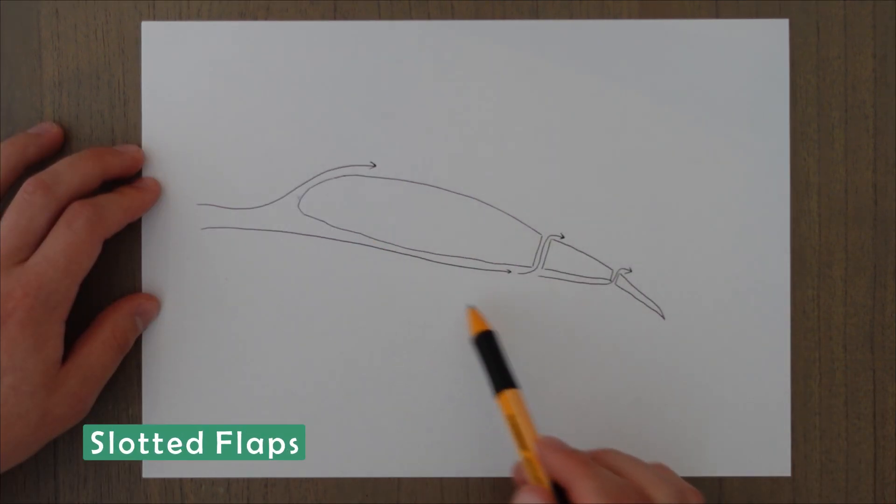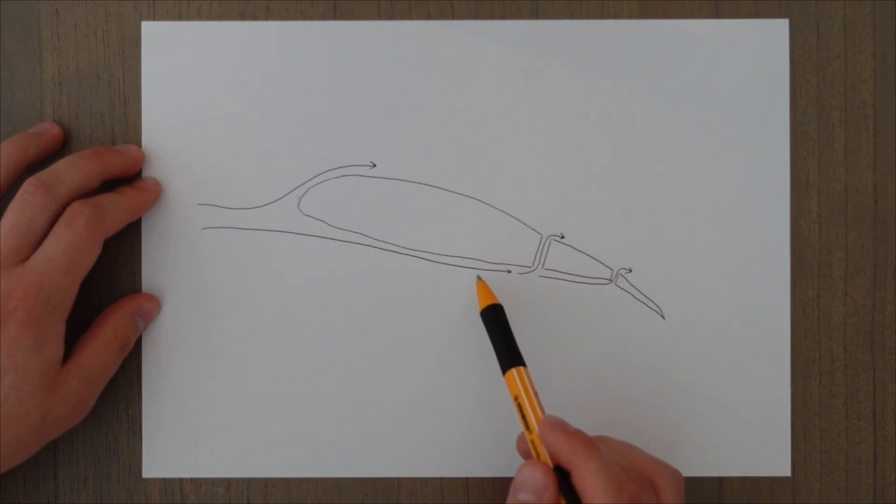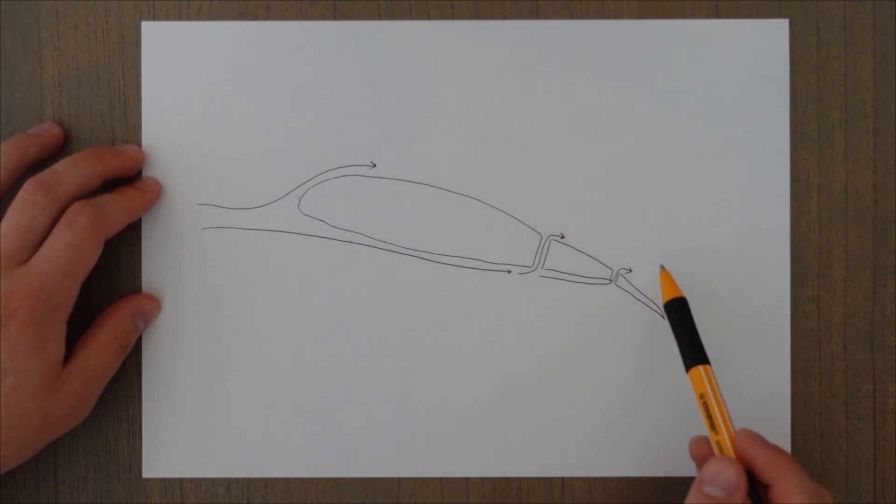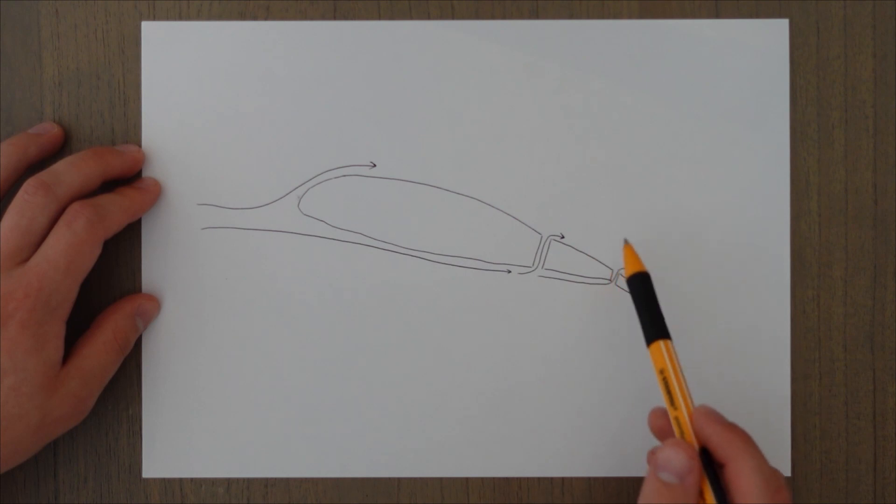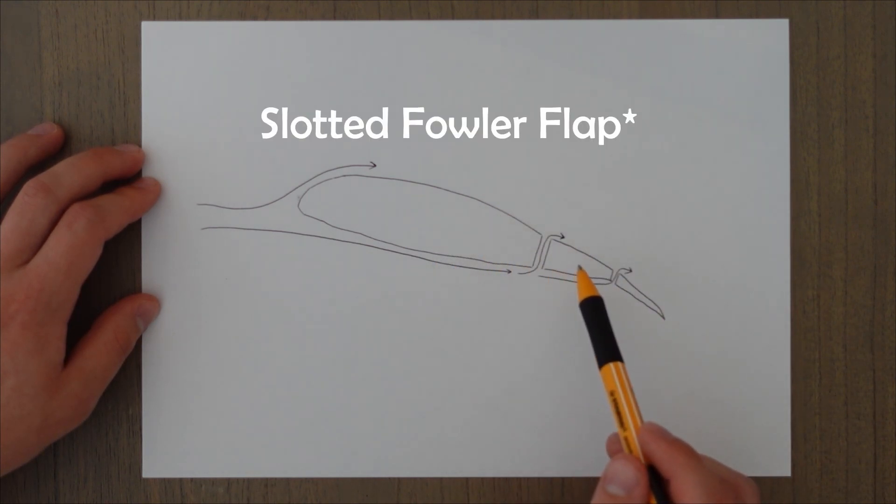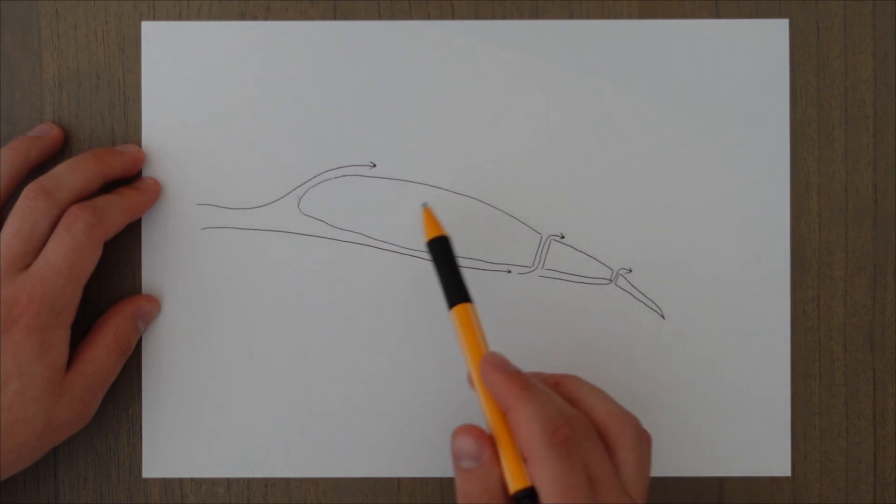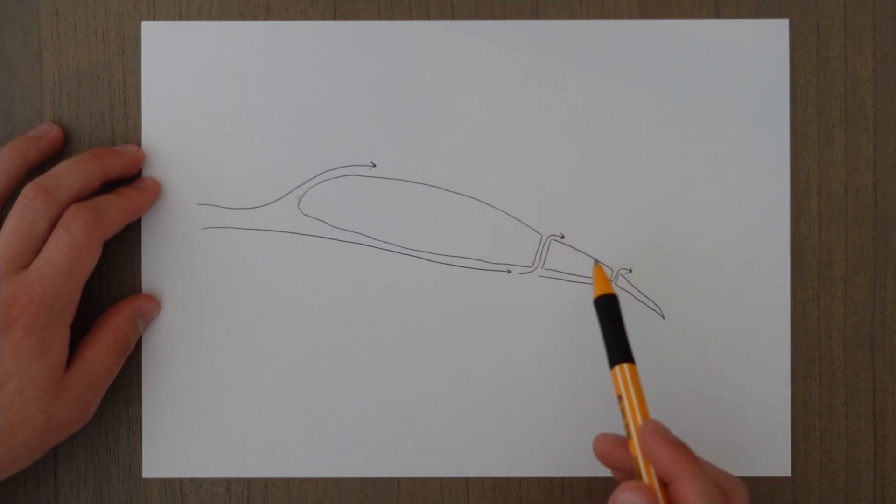A slotted flap uses the same principle of re-energizing the boundary layer and it uses it on the trailing edge instead of the leading edge. This example here is a slotted Kruger flap so you get the increase in area you get the increase in coefficient of lift and you also get this re-energizing of the boundary layer. This is why you see these all the time on jet airlines these days because they're really good and efficient producers of lift whilst increasing that critical angle of attack.